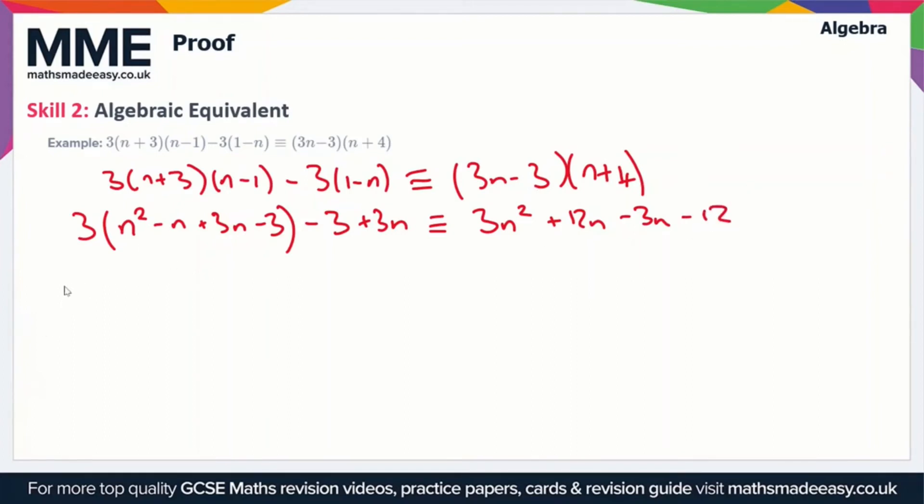So here let's just simplify this line a bit. So we've got 3 lots of n squared minus n plus 3n simplifies to plus 2n, then we've got minus 3 and then we've got minus 3 again on the outside plus 3n and that's equivalent to 3n squared plus now 12n minus 3n is 9n and we've got the minus 12 on the end.